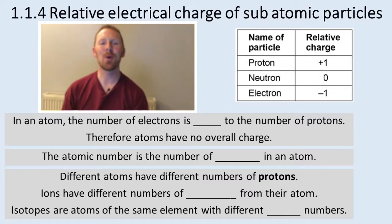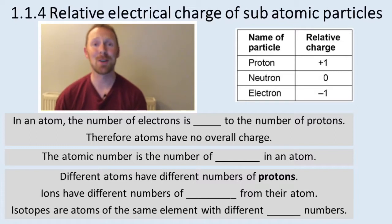Okay, we're looking at specification point 1.4, relative electrical charge of subatomic particles. There are three subatomic particles you need to know about. First of all, there's the proton